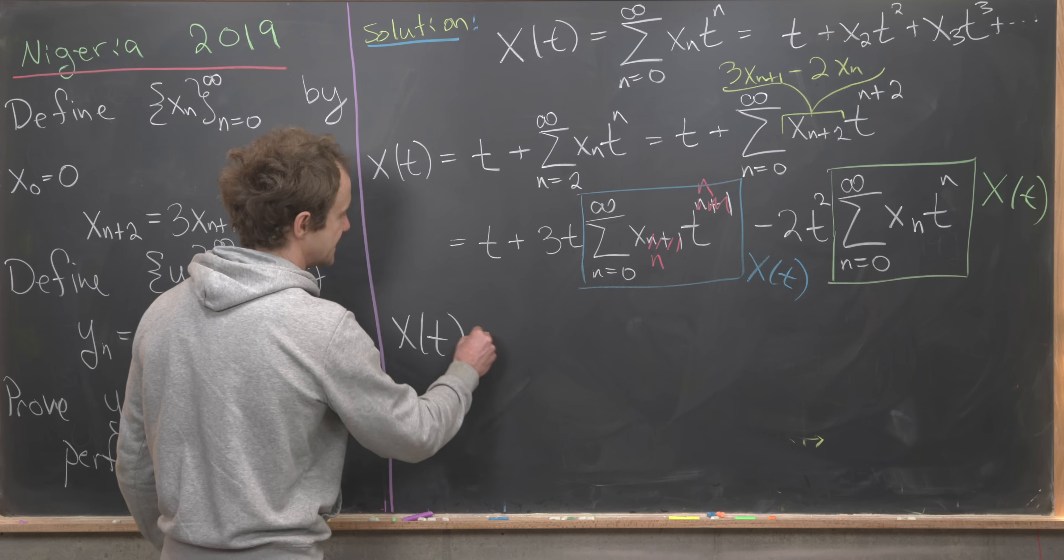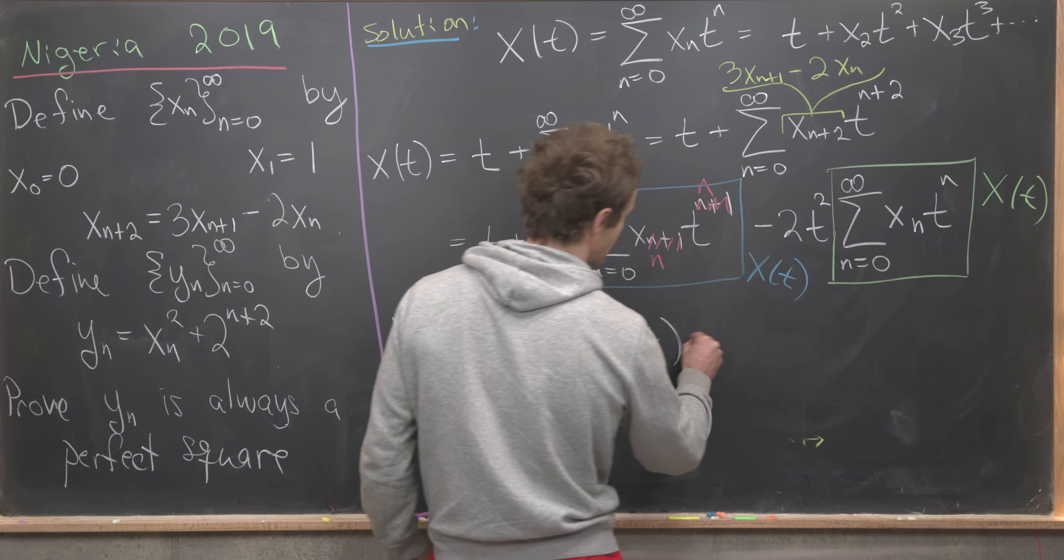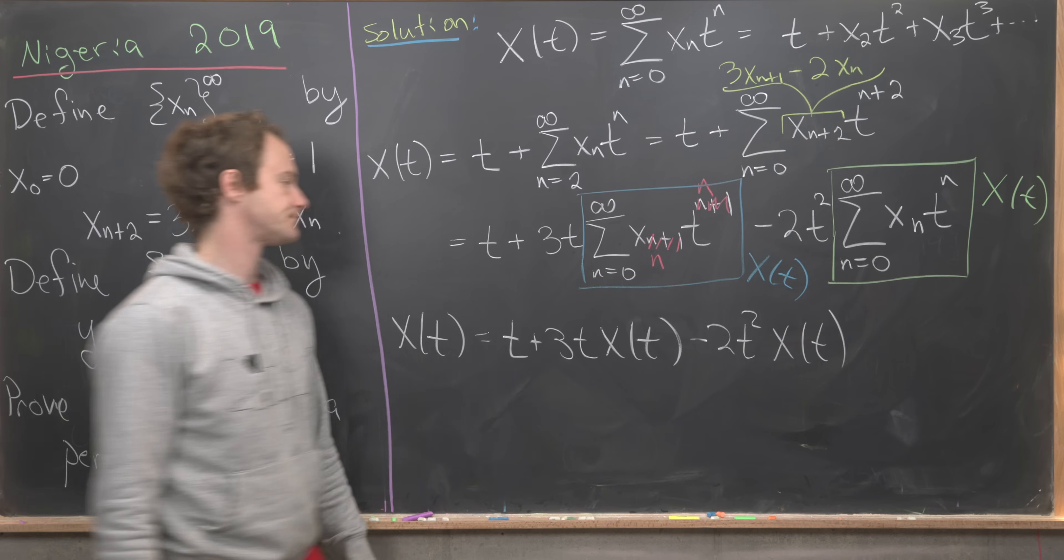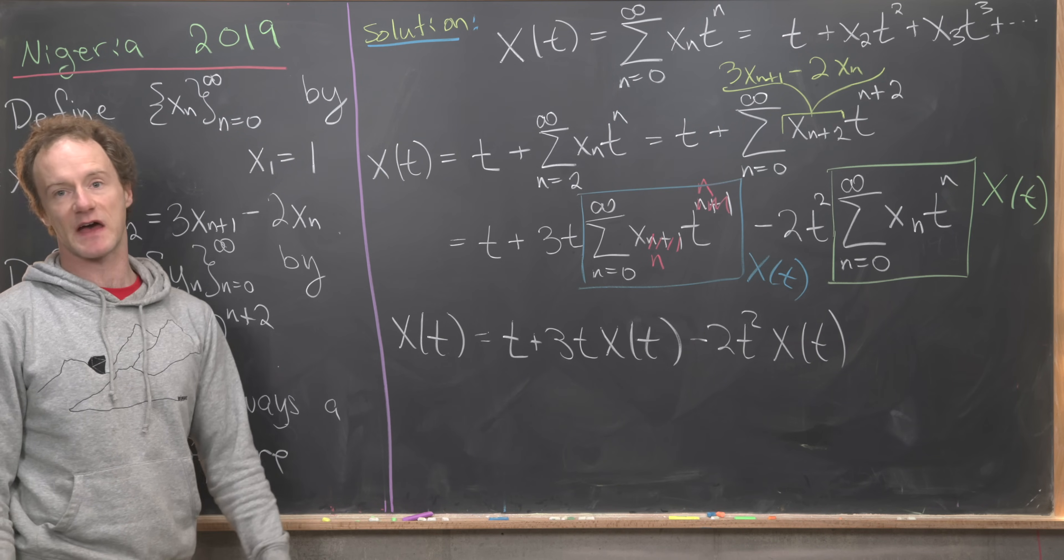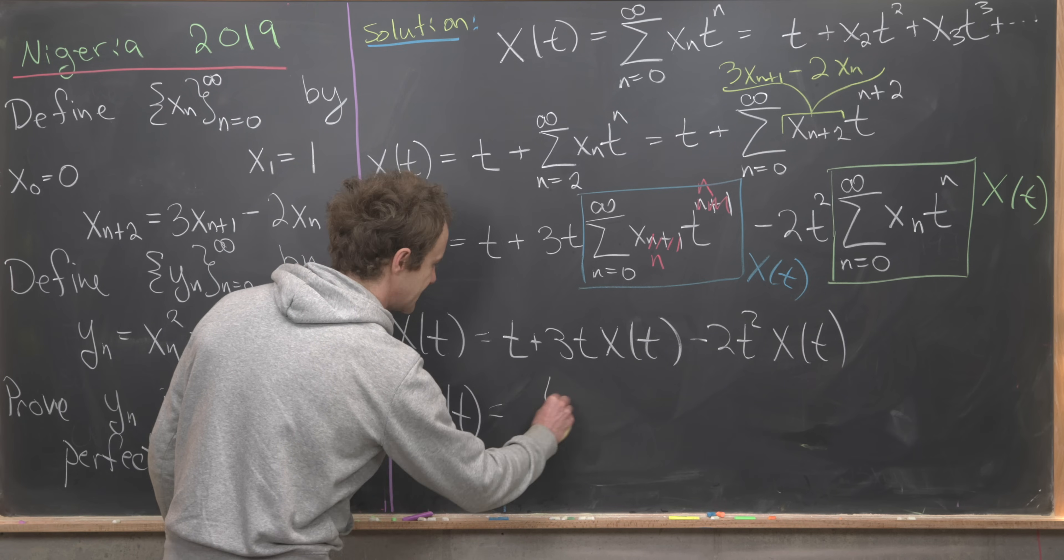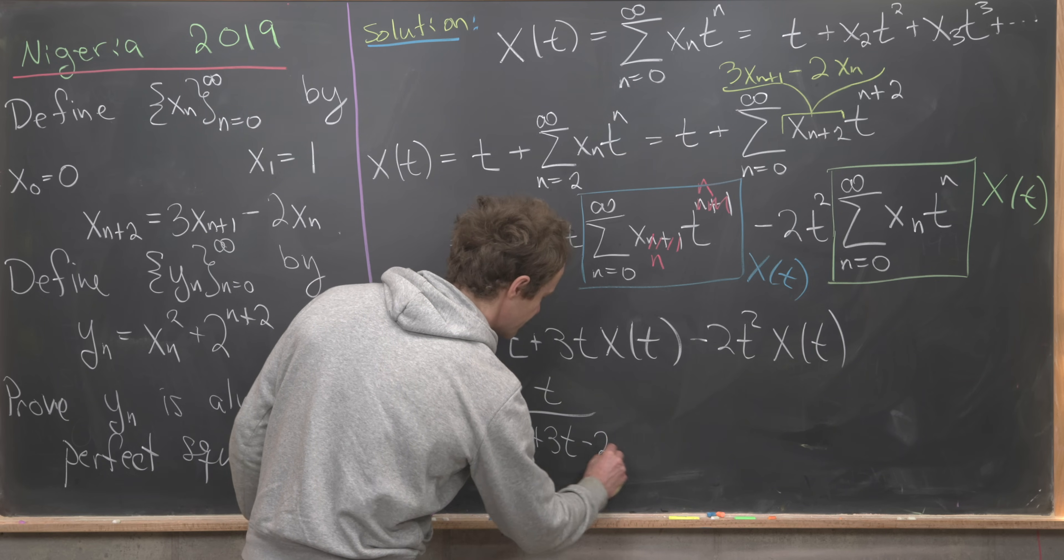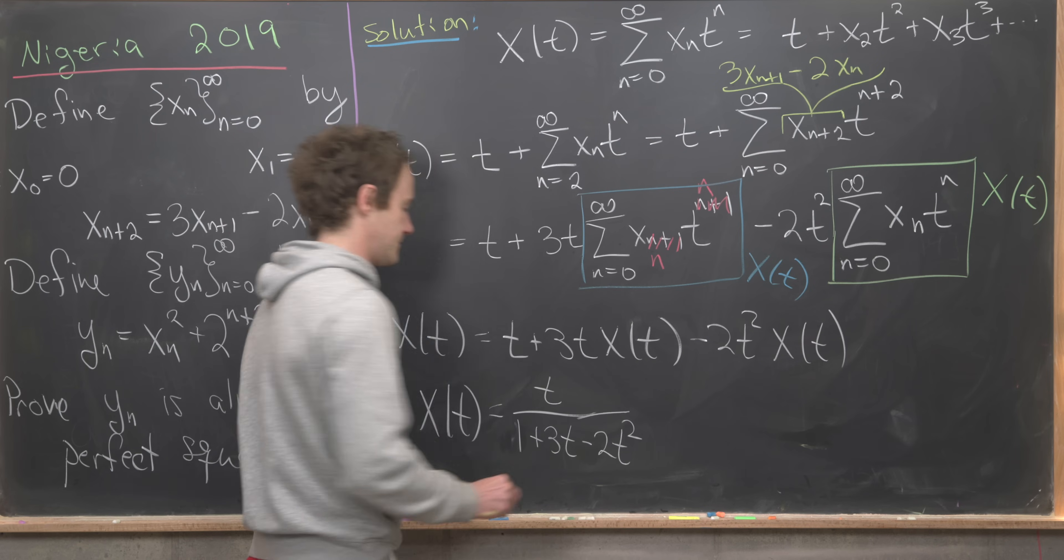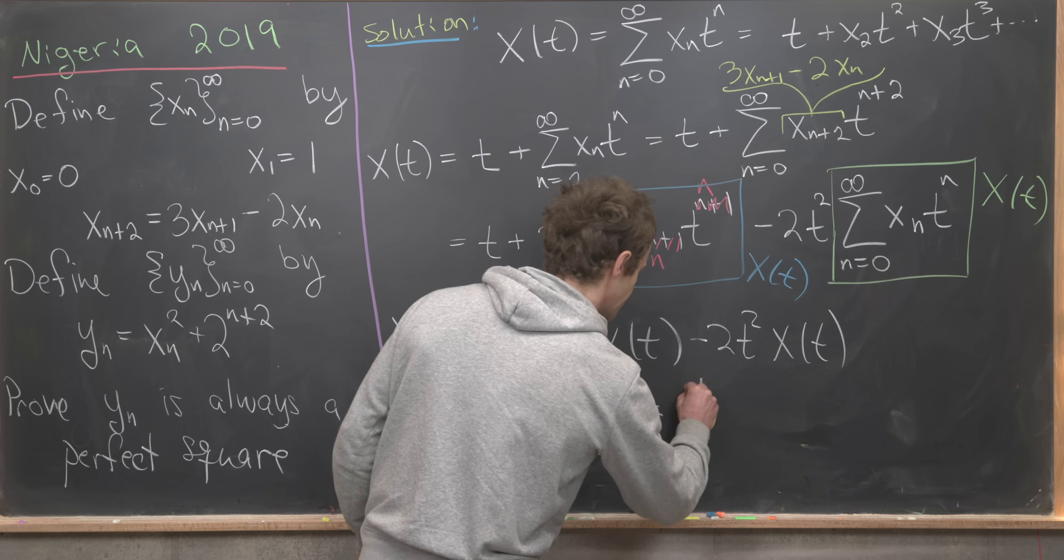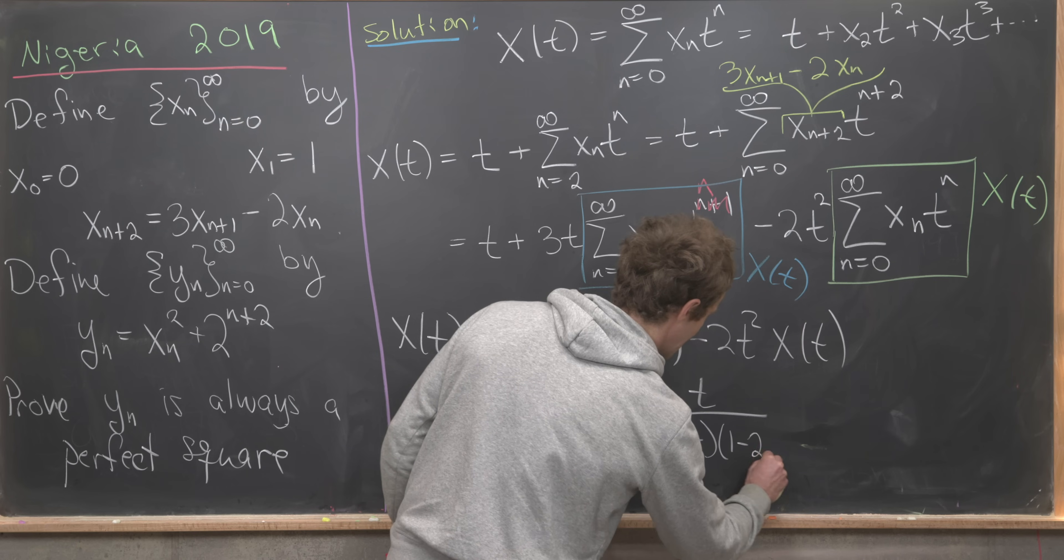So we've got capital X of t is equal to t plus 3t times capital X of t minus 2t squared times capital X of t. I can easily solve that for my capital X of t. That'll give me capital X of t equals t over 1 minus 3t plus 2t squared. Now that gives us motivation to factor that denominator. We can factor that denominator into 1 minus t times 1 minus 2t.